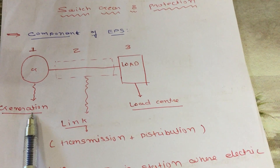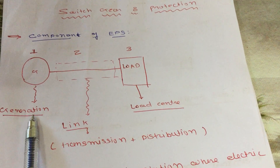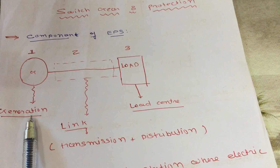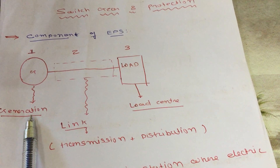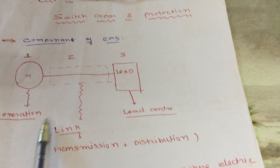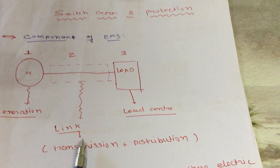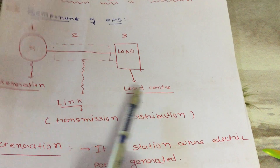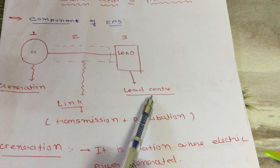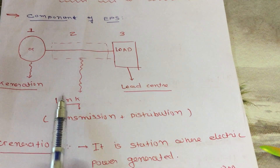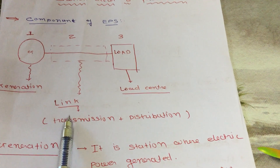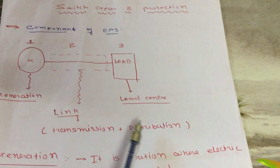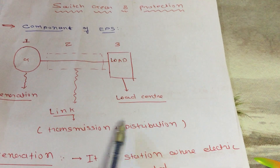These generators include wind generation, hydro generation, thermal generation, etc. The second section is the link connecting generation and load center. This link consists of two sections: transmission section and distribution section.